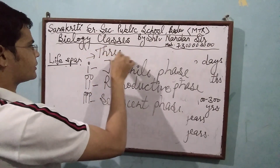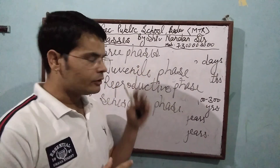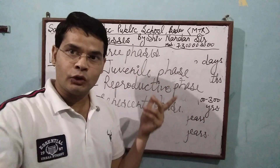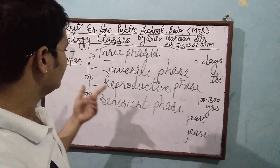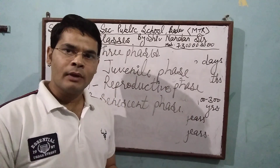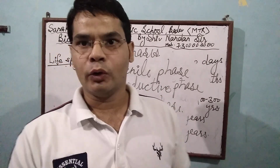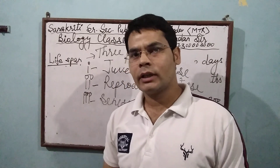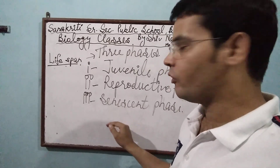There are three phases of life span. First is the Juvenile phase — this is the growing phase, with rapid growth. In plants, this is also called the Vegetative phase. Second is the Reproductive phase, also called the maturity phase. Third is the Senescent phase, which finally leads to death.